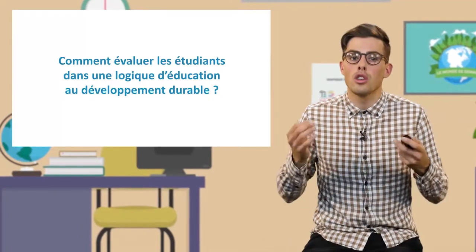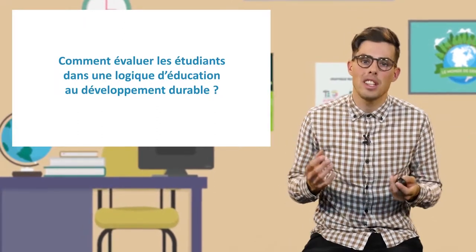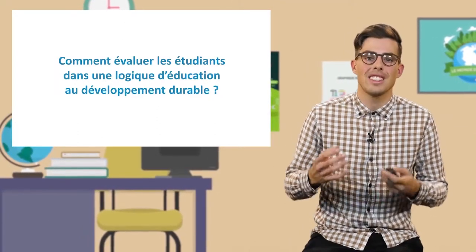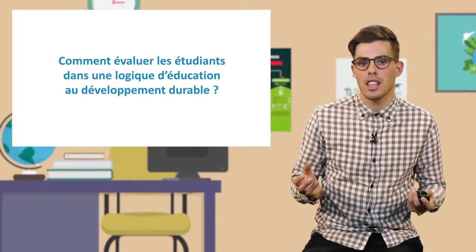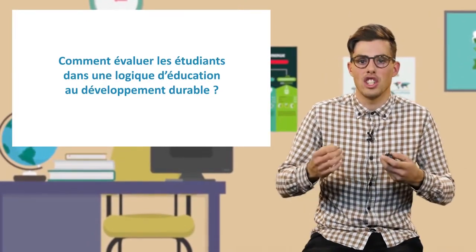La grande question la voilà : comment examiner les étudiants dans une logique d'éducation au développement durable ? La première chose à considérer est que le format que prend l'examen n'est jamais neutre. Et ça parce qu'il porte en lui un jugement de valeur sur les compétences qui sont jugées utiles. Par exemple, un questionnaire à choix multiples individuel encourage indirectement l'individualisme et transmet aux étudiants une image de l'éducation en tant que processus de rétention de connaissances, laissant de côté l'aspect critique et coopératif.